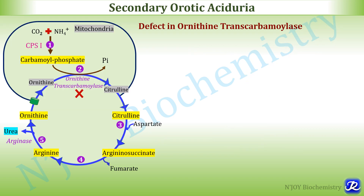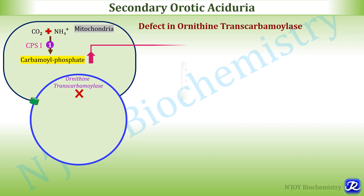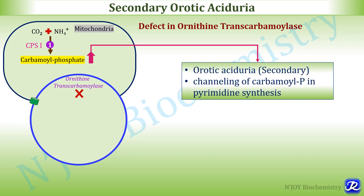What is secondary orotic aciduria? It is due to a defect in the ornithine transcarbamylase enzyme of the urea cycle. In the second step of the urea cycle, ornithine is converted to citrulline by ornithine transcarbamylase. If this enzyme is defective, carbamoyl phosphate synthesized in the first step cannot be converted to citrulline. The increased carbamoyl phosphate is then channeled into pyrimidine synthesis, leading to increased orotic acid production — hence it is called secondary orotic aciduria.